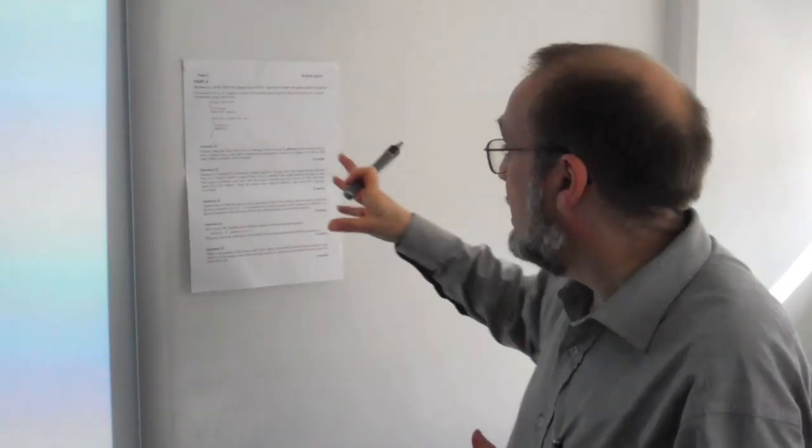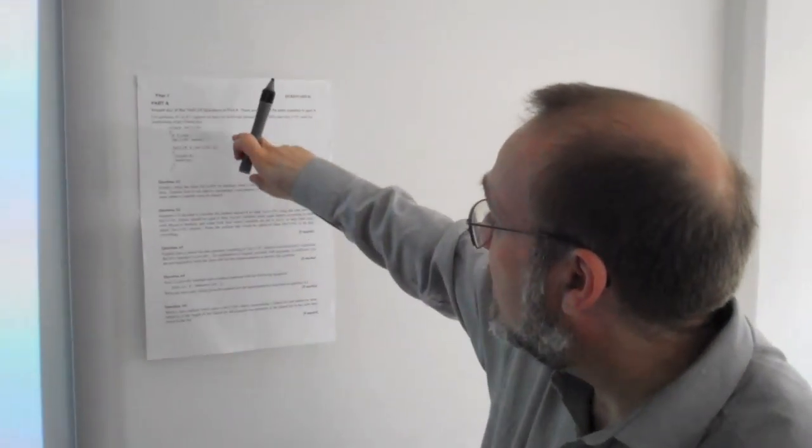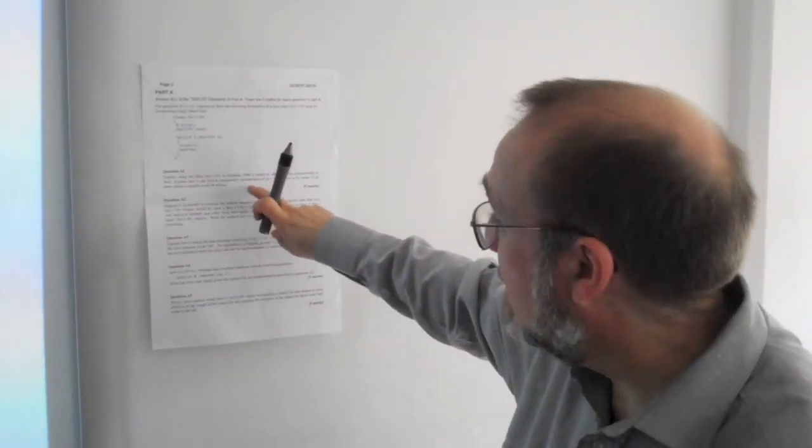This question in the paper actually tells you to use the linked list cell example to explain aliasing. Let's remember what aliasing means.